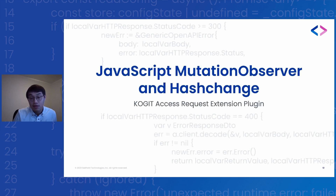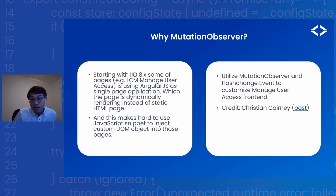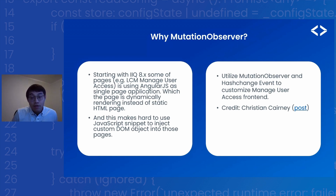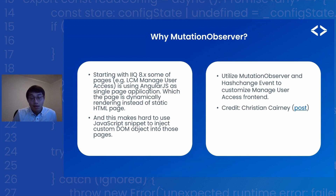JavaScript Mutation Observer and hash change. Why mutation observer? Starting with IAQ 8, some pages such as Manage User Access are using AngularJS as a single page application. A single page application is a web application that loads a single HTML page, and during each trigger event only a part of the page gets updated instead of the entire page. This makes it hard to use JavaScript snippets like jQuery to inject custom DOM objects into those pages, as the corresponding component is dynamically loaded. Christian Canary — credit to him — hinted me that mutation observer can be used to overcome this bottleneck. In this session we will use mutation observer and hash change events to customize the manage user access flow.